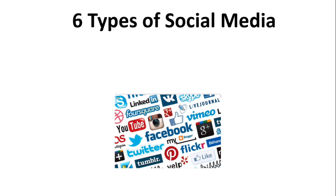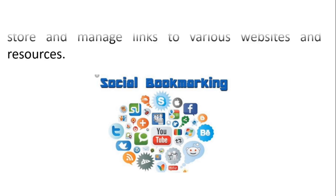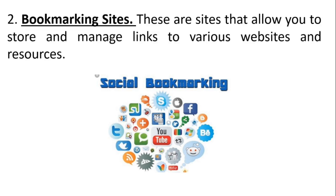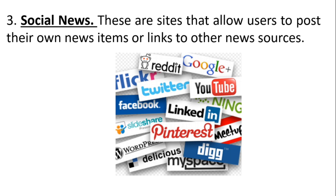Types of Social Media: 1. Social Networks — these sites allow you to connect with other people with the same interests or background. 2. Bookmarking Sites — these are sites that allow you to store and manage links to various websites and resources. 3. Social News — these are sites that allow users to post their own news items or links to other news sources.